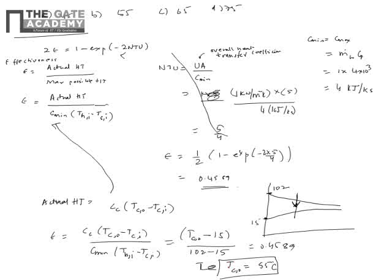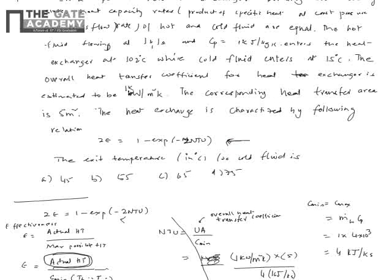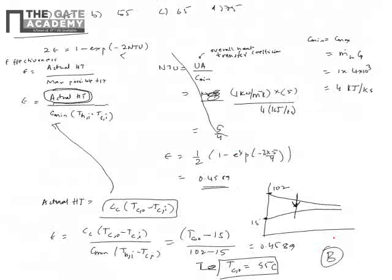Though not asked, the exit temperature of the hot fluid can also be calculated by writing the actual heat transfer for the hot fluid with the same effectiveness value. This method works by first calculating effectiveness from NTU, then finding whichever outlet temperature is required. The answer for this problem is option B: 55°C.